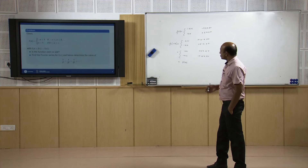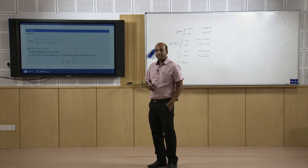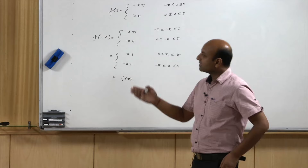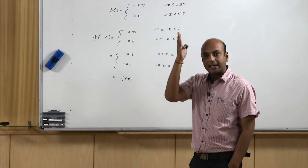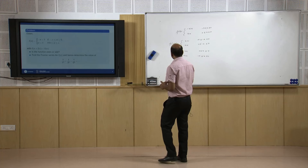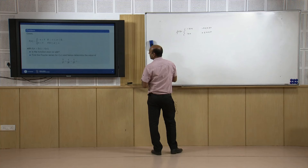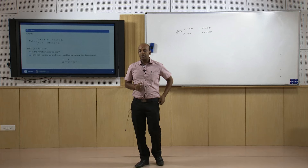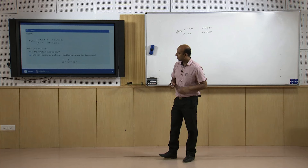One can also verify graphically: an even function is symmetrical about the y-axis. Since f(-x) = f(x), this is confirmed as an even function. For the Fourier series expansion, since it is even, it will contain only cosine terms and bₙ = 0, as we have already established.